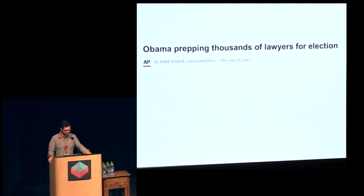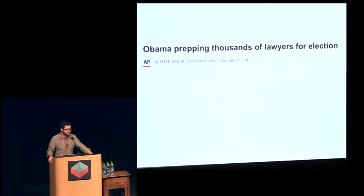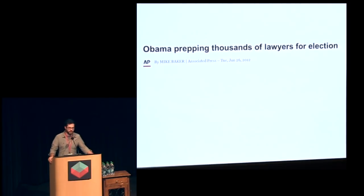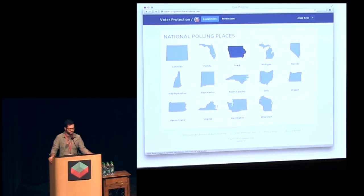Back to some of the tools I was working on. After working on Dashboard for a while, I got added to the voter protection team and there were a couple of tools we built for that. 'Obama prepping thousands of lawyers for election' — we didn't have thousands of people filing lawsuits, but we did have thousands of volunteer attorneys going to observe polling places. It turns out that's a pretty massive thing to coordinate. In previous cycles that was done basically with printouts of Excel spreadsheets and a lot of phone calls, but this time we wanted something more structured and easier to use. There were two pieces — the volunteer assignment tool and the incident tracking side.